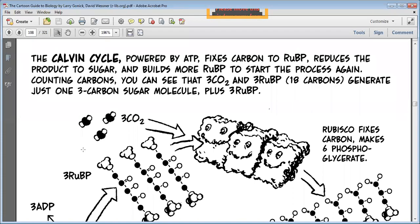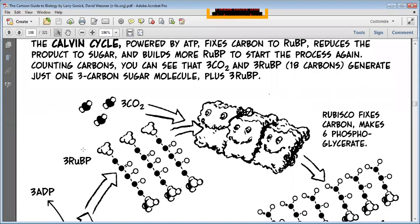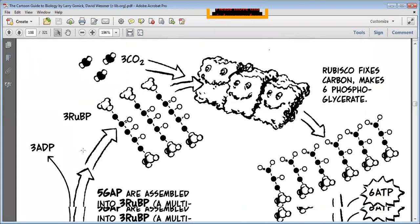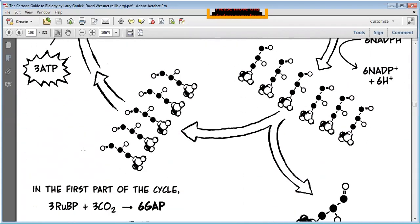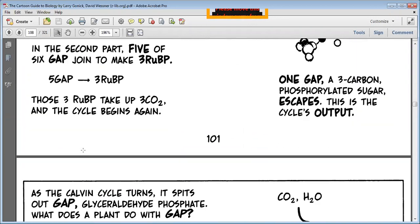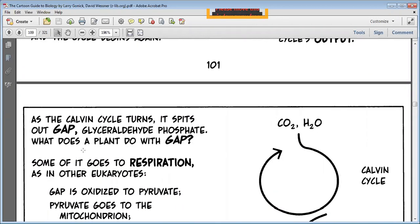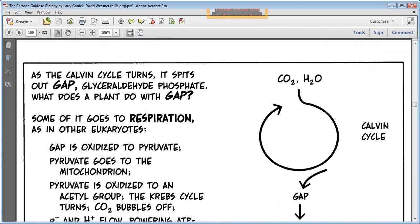The Calvin cycle, powered by ATP, fixes carbon to RUBP, reduces the product to sugar, and builds more RUBP to start the process again. Counting carbons, you can see that 3 CO2 and 3 RUBP, 18 carbons, generate just 1 3-carbon sugar molecule plus RUBP. So you know rubisco bisphosphate is this. This is a long cycle which you will study in class 11th. This Calvin cycle turns into GAP, that is glyceraldehyde phosphate.